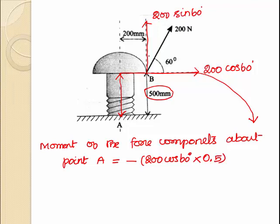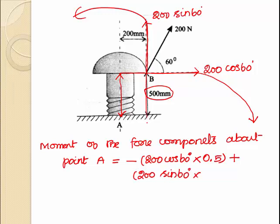Considering the second force component, that is 200 sin 60 — about point A, this 200 sin 60 is acting in the anti-clockwise direction. So the sign is positive: plus 200 sin 60, multiplied by the distance between this force component and point A, which is 200 mm, that is 0.2 meter.